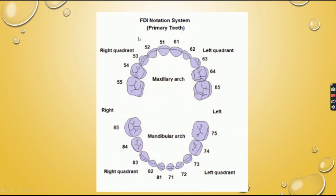To summarize the FDI notation for primary teeth: 51 to 55 for the right maxillary quadrant, 61 to 65 for the left maxillary quadrant, 71 to 75 for the mandibular left quadrant, and 81 to 85 for the mandibular right quadrant.